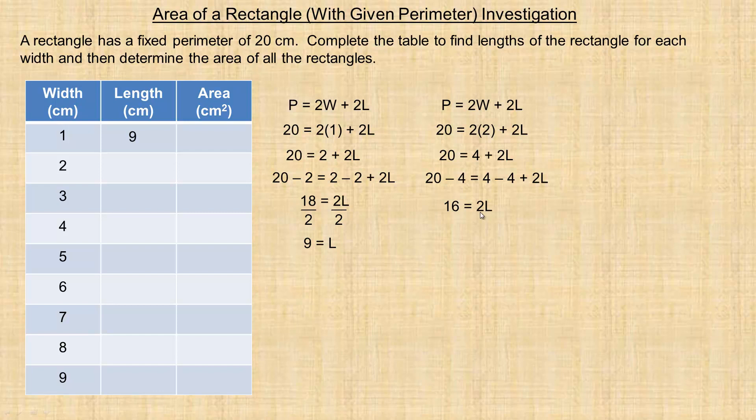This is just going to be 2L, and 20 minus 4 is 16. I want to isolate for L here, so I'm going to divide out 2 again, just like I did before. So 2 divided by 2 is 1, so it's just L on the right here, and 16 divided by 2 is 8. So 8 would be the length if the width is 2.